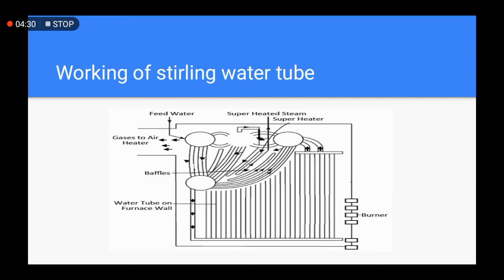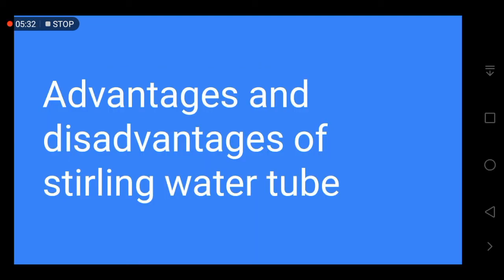The lower drums are hung with the upper drums with the help of tubes. Due to this hanging structure, all parts of the boiler can expand and shrink easily. All the tubes are covered with fire brick walls, which is called the external fire brick wall or furnace of the boiler.